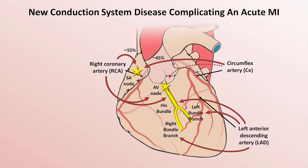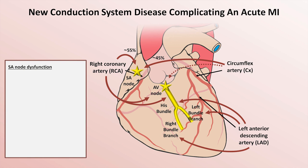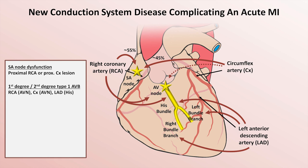When dealing with new conduction system disease complicating an acute MI, the specific type of conduction problem can suggest a specific culprit vessel or possible vessels. Sinus node dysfunction — either sinus bradycardia or sinus arrest — suggests either a proximal RCA or proximal circumflex obstruction. The cause of 1st degree AV block or type 1 2nd degree AV block is typically located in the AV node, but can be rarely located in the HIS bundle. Thus, acute obstruction of any vessel can theoretically lead to these rhythm problems.